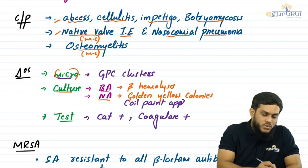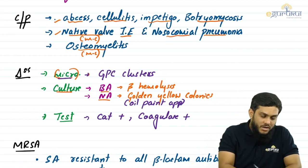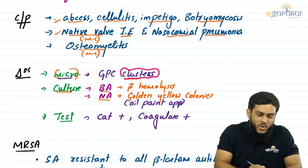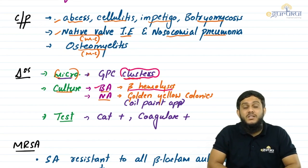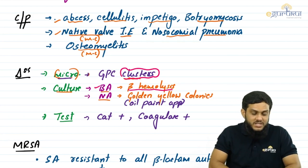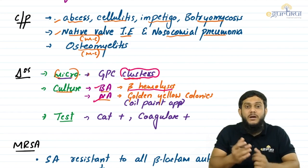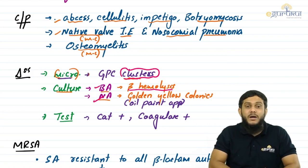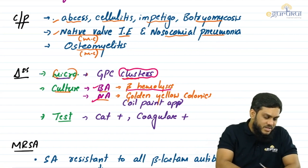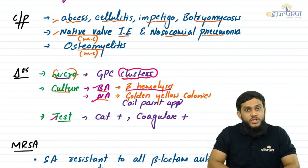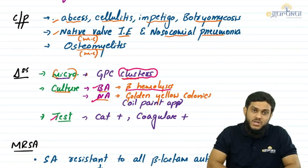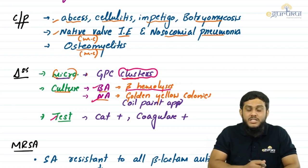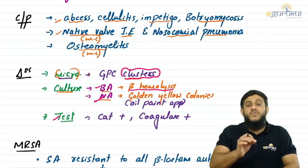For diagnosis, on gram stain microscopy, staphylococcus aureus appears as gram positive cocci arranged in clusters. On blood agar, due to hemolysin toxin, it causes complete hemolysis — beta hemolysis. On nutrient agar, staphylococcus aureus produces a golden yellow pigment giving an oil paint appearance. Special confirmatory tests: catalase positive indicates staphylococcus; coagulase positive confirms the species as aureus.